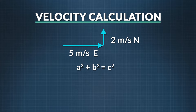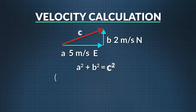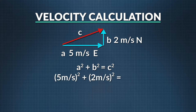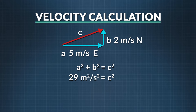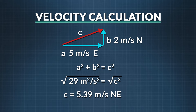We can label the boat's velocity relative to the pier as a, my velocity relative to the boat as b, and the resultant velocity relative to the pier as c. The Pythagorean theorem says that a squared plus b squared equals c squared. 5 squared plus 2 squared equals c squared. 5 squared is 25, and 2 squared is 4. 25 plus 4 is 29. Taking the square root of both sides, we find that c equals 5.39 meters per second going northeast. So from the frame of reference of the pier, I traveled 5.39 meters per second going northeast relative to the pier.